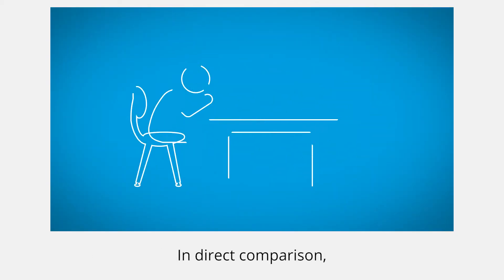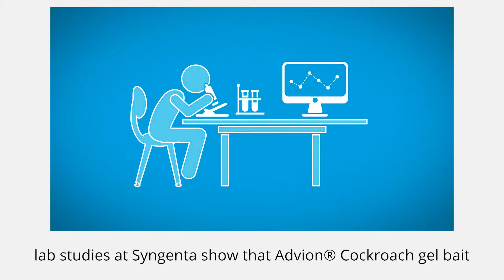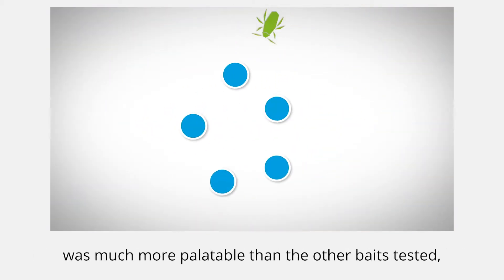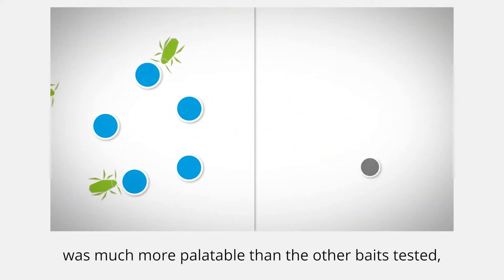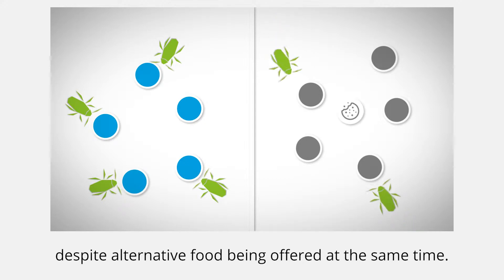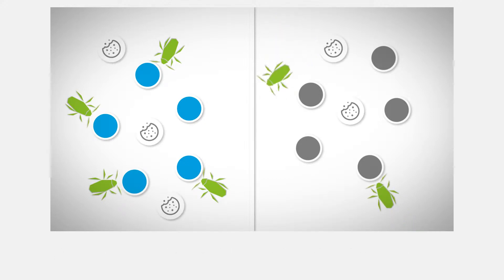In direct comparison, lab studies at Syngenta show that Advion cockroach gel bait was much more palatable than the other baits tested, despite alternative food being offered at the same time.